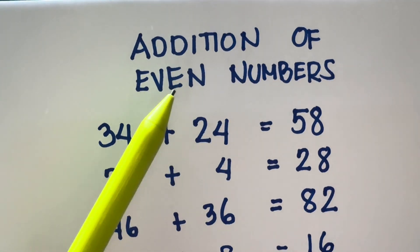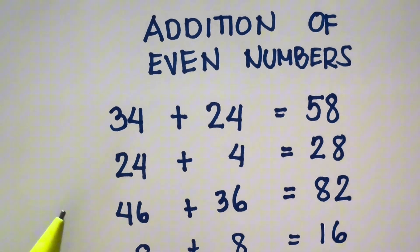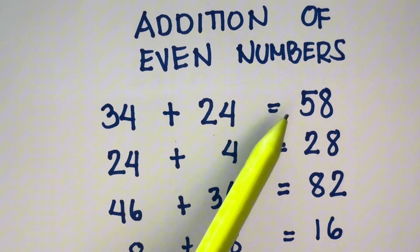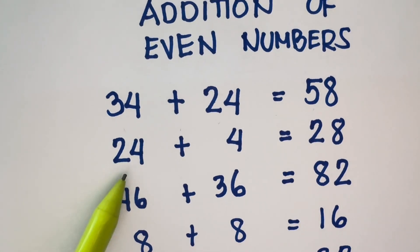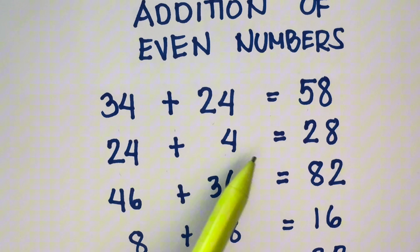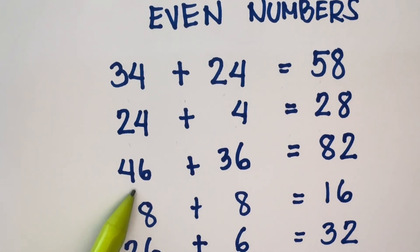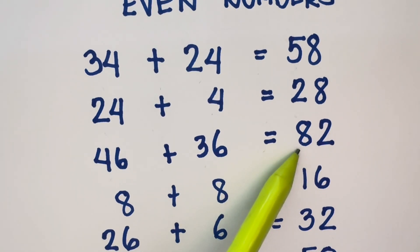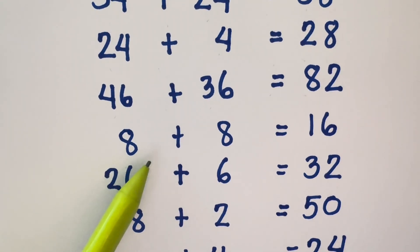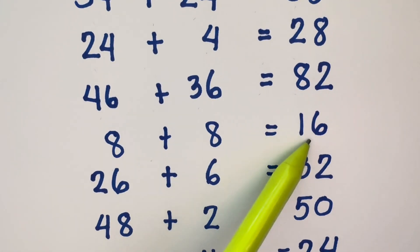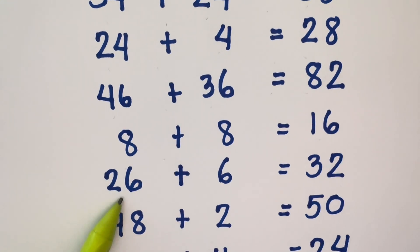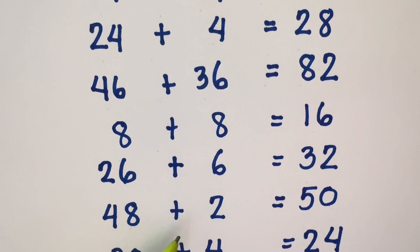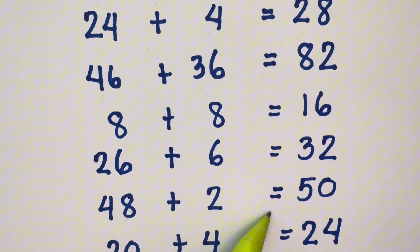Addition of Even Numbers. 34 plus 24 is equals to 58. 24 plus 4 is equals to 28. 46 plus 36 is equals to 82. 8 plus 8 is equals to 16. 26 plus 6 is equals to 32. 48 plus 2 is equals to...